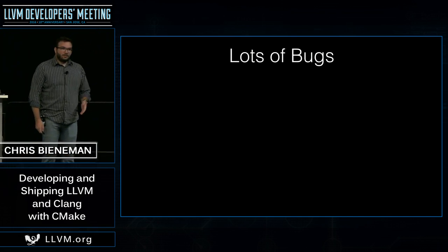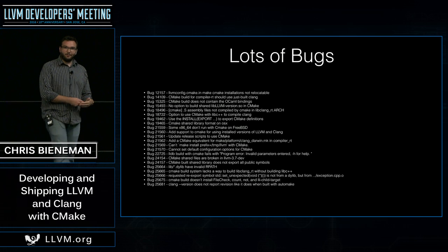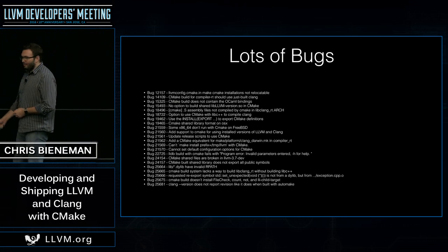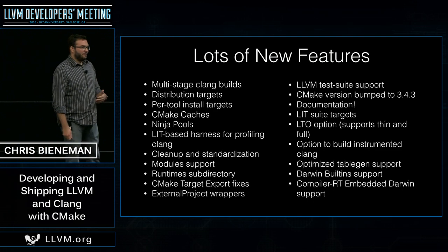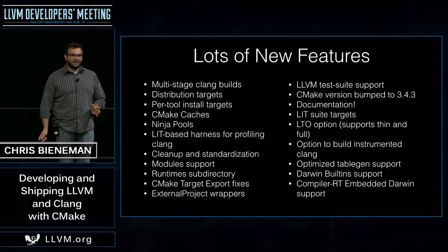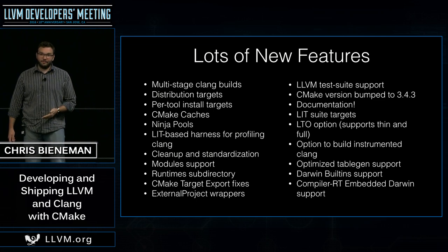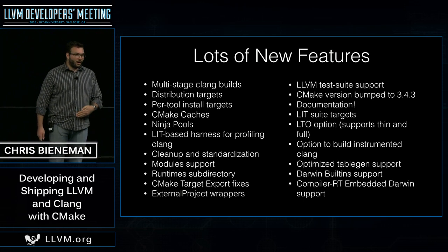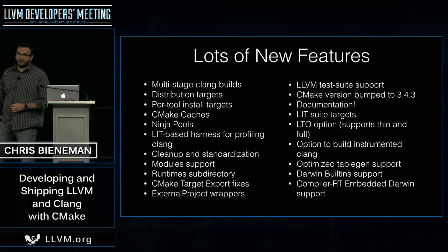To give an idea of what went into this change, we fixed a lot of bugs. This is just a limited set tracked in Bugzilla — and our bug hygiene isn't always great. We also added a bunch of new features to the build system. If you look at some of these, you'll probably notice that some weren't even supported in AutoConf. The CMake build system has really impressed me in that people in the community are willing to modify it to fit their needs better.